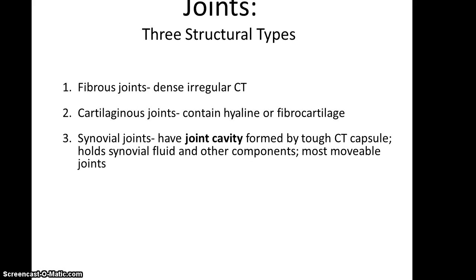There are three main structural categories for the different joints of the body. The first category is fibrous joints, where bones are connected by dense irregular connective tissue and usually undergo little to no movement. The second category is cartilaginous joints, where joints are connected by hyaline cartilage or fibrocartilage, and again these bones do not move or only move a little bit. The third category is synovial joints, which are the most movable and most common joints in the body. These joints have a joint cavity formed by a tough connective tissue capsule, and inside that cavity holds synovial fluid and other components.